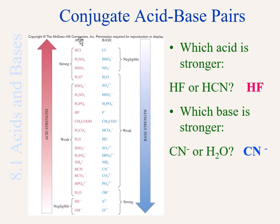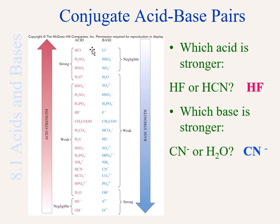Notice what's going on — not only are we classifying the acids among themselves by strength, but you can see that when you have a very strong acid, the corresponding conjugate base is a weak base. The strongest bases are on the bottom, meaning acid strength and base strength are on opposite ends of the spectrum. When an acid is strong, its conjugate base is weak; when an acid is weak, its conjugate base is very strong.